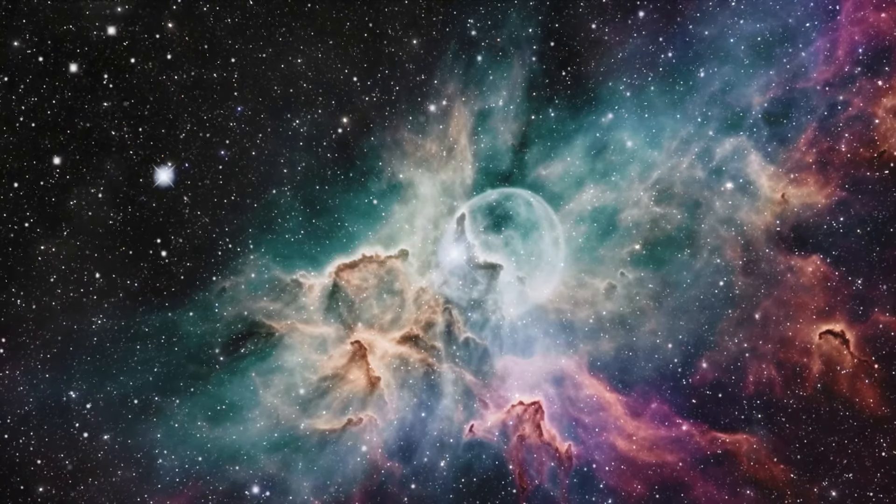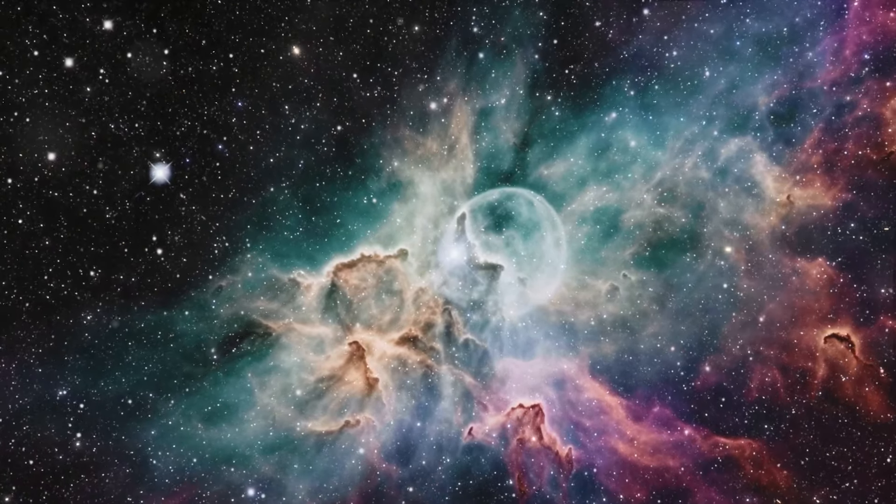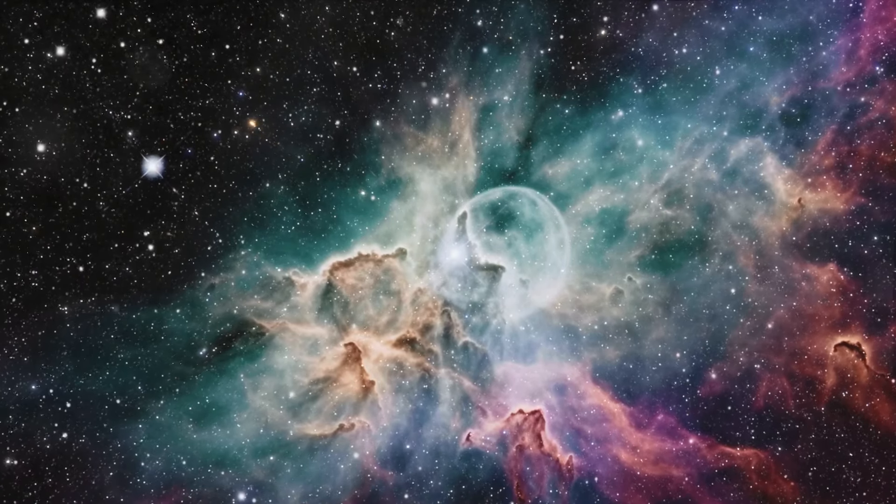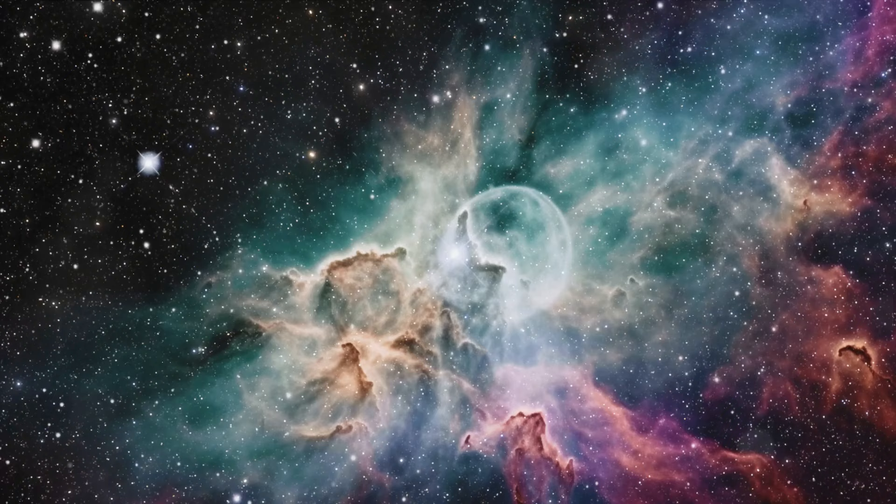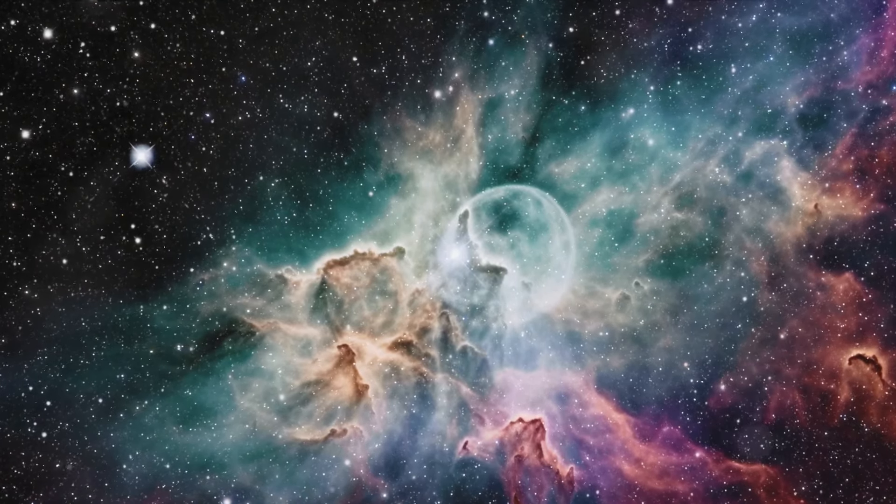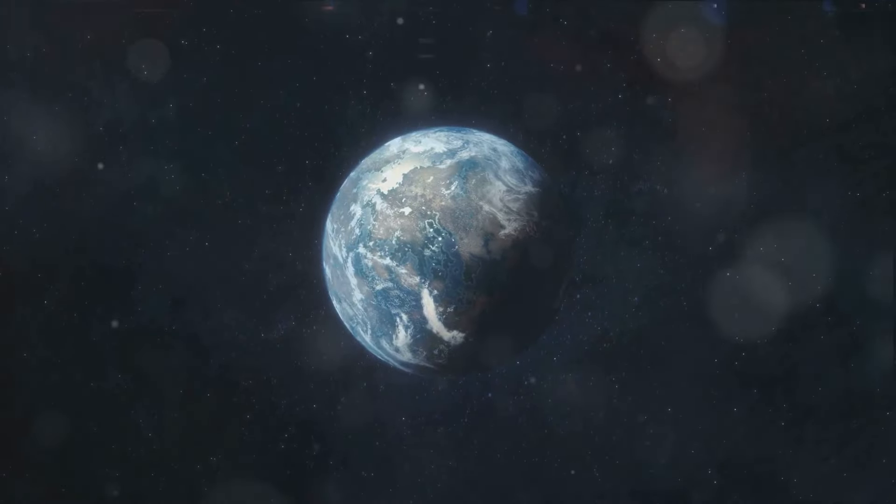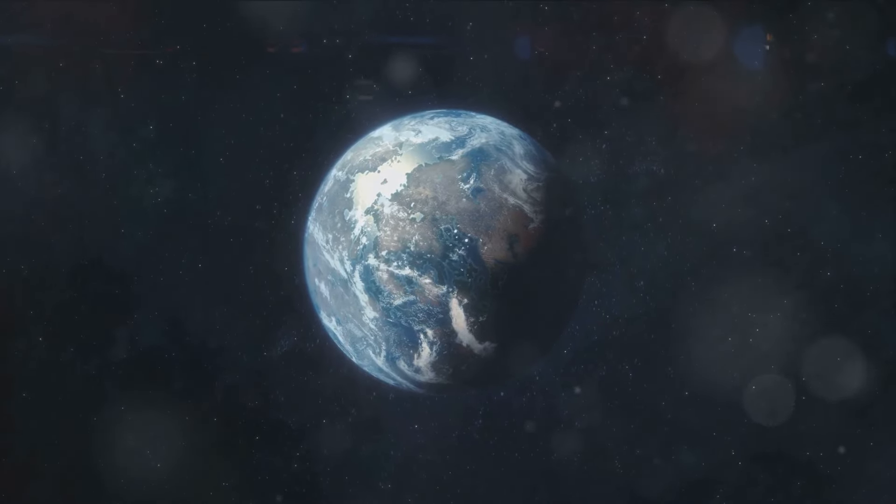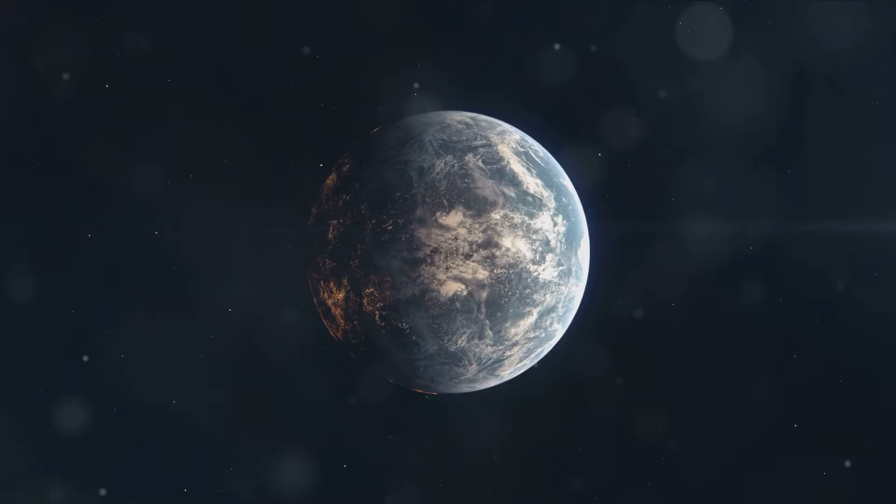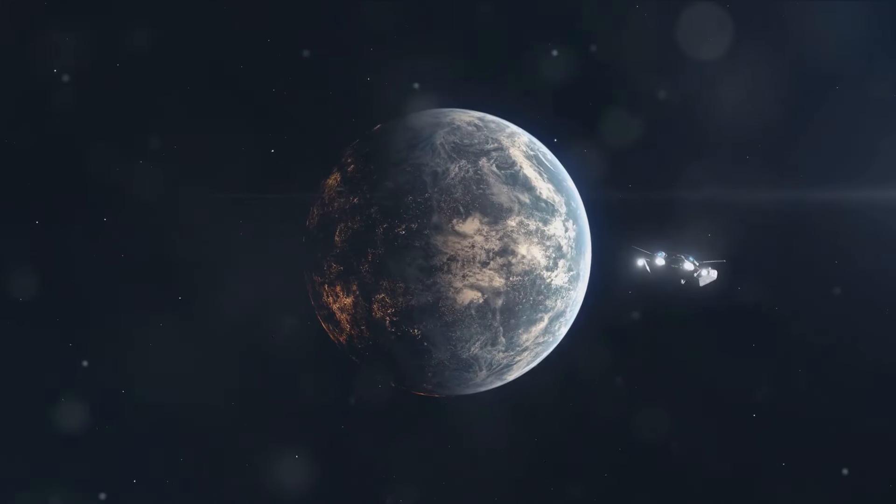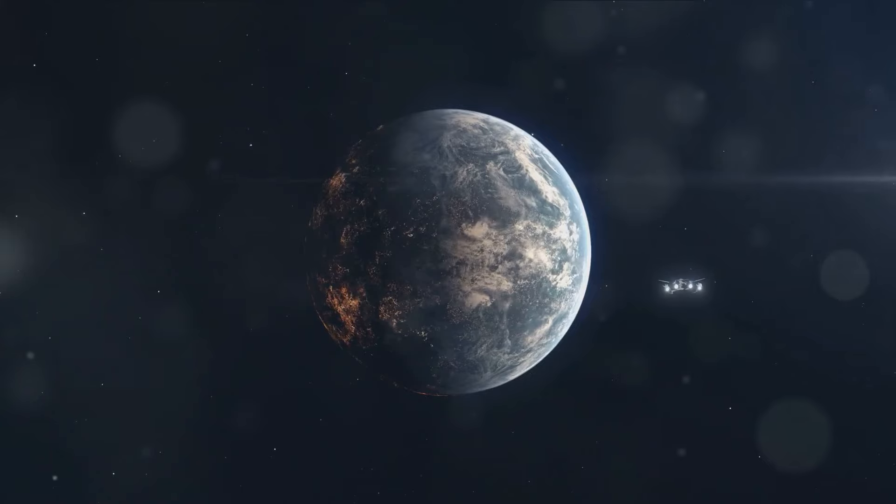Proxima Centauri b captivates our attention not merely due to its proximity, but also because of its striking resemblance to our home planet. The exoplanet is composed predominantly of rock, mirroring Earth's geological attributes. Its mass bears a striking similarity to Earth, further cementing its status as the prime candidate for a twin planet. The parallels with Earth don't stop there, as the planet's position within the star system opens the door to greater possibilities.